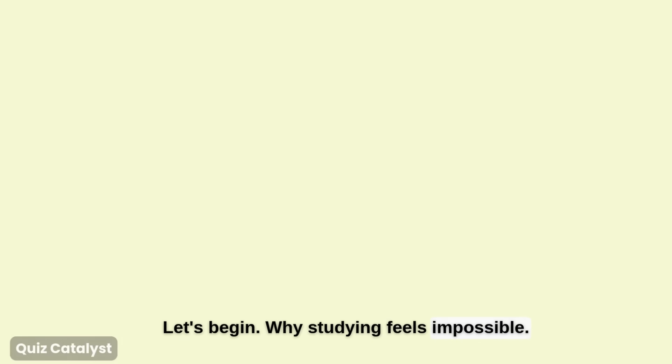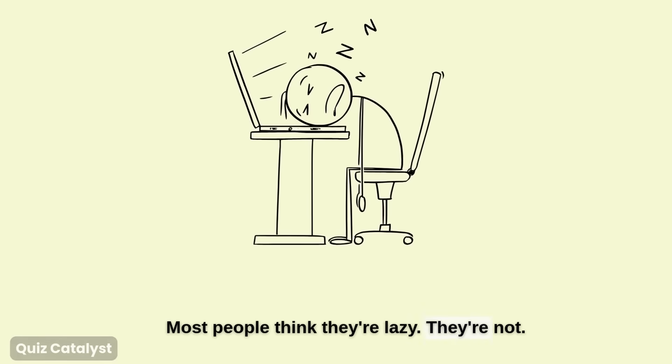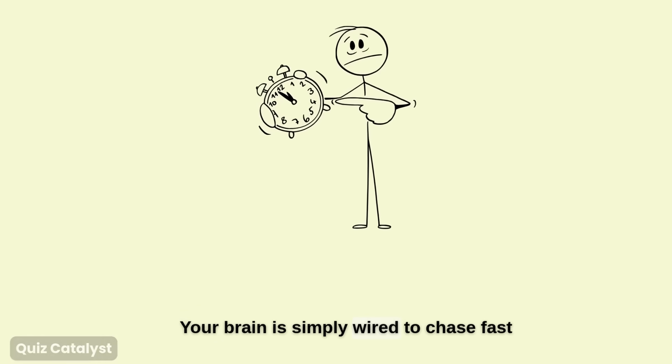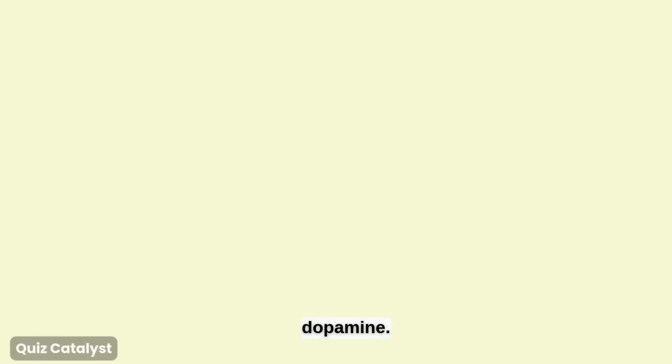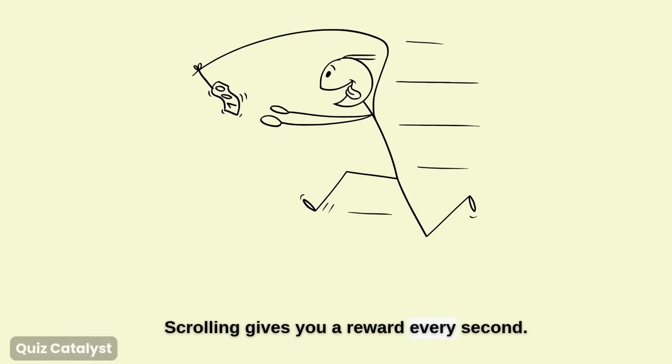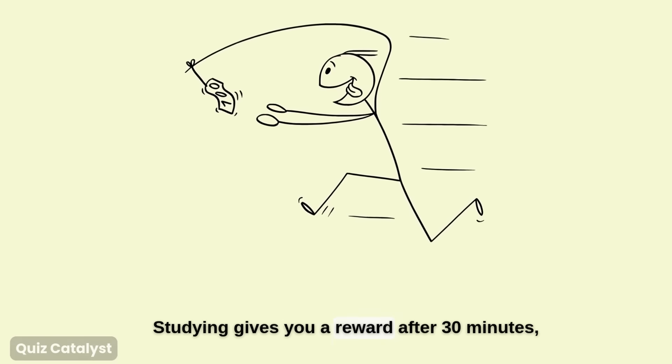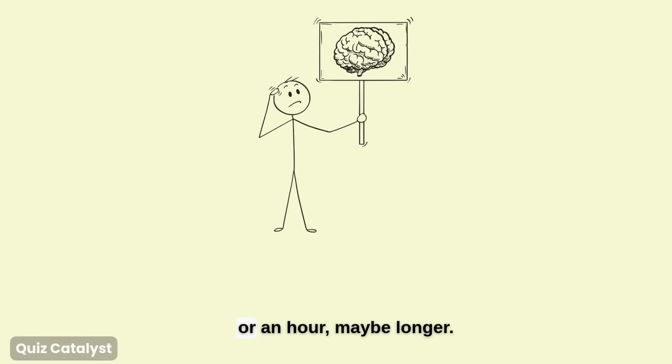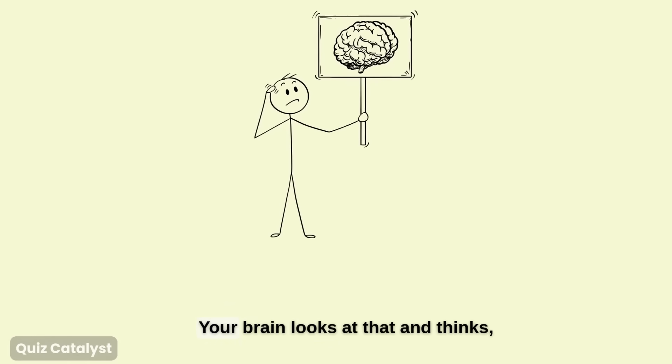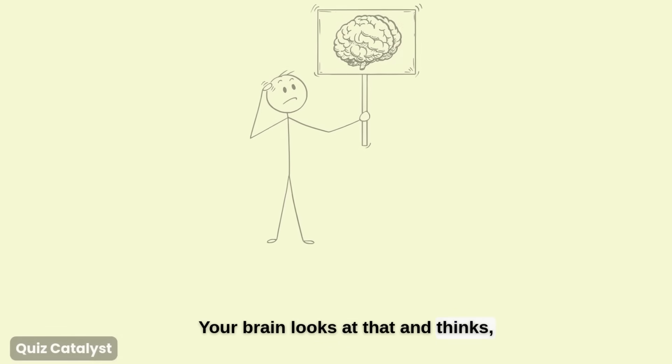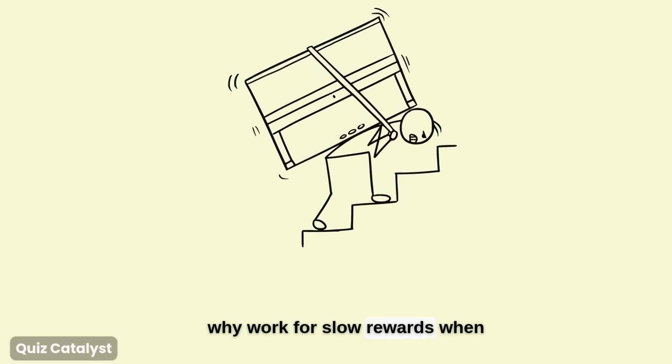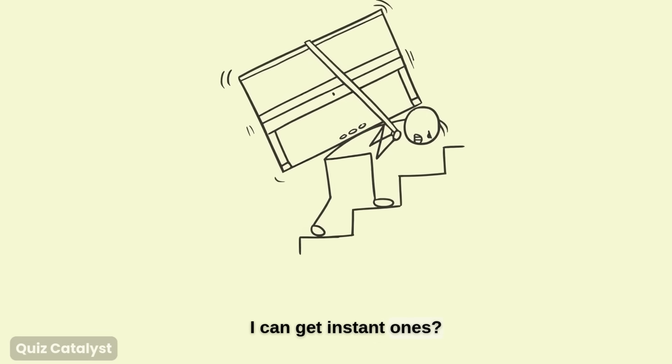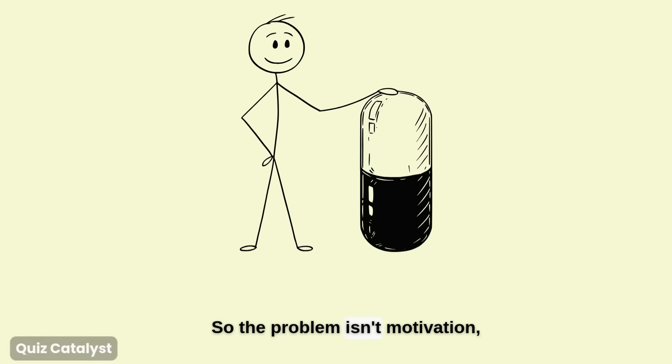Why studying feels impossible? Most people think they're lazy. They're not. Your brain is simply wired to chase fast dopamine. Scrolling gives you a reward every second. Studying gives you a reward after 30 minutes, or an hour, maybe longer. Your brain looks at that and thinks, why work for slow rewards when I can get instant ones? So the problem isn't motivation, it's the timing of your dopamine.